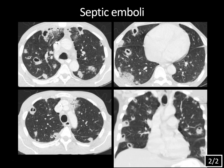Tricuspid endocarditis is the most common cause of septic emboli in IV drug users, but other causes include infected DVT or thrombophlebitis and infected catheters and lines. The agent is usually Staph aureus or Streptococcus. Cavitation is common but you'll see varying stages — some nodules have not yet cavitated. You may also see a feeding vessel sign, where the pulmonary artery leads up to the nodule, reflecting the bacteremic origin of these emboli.